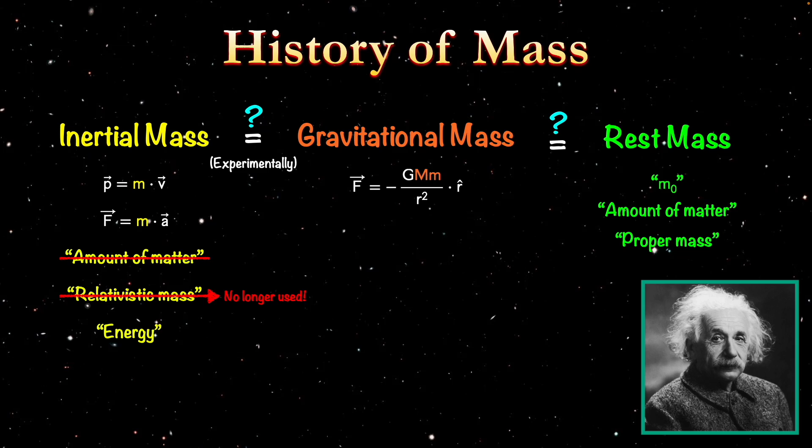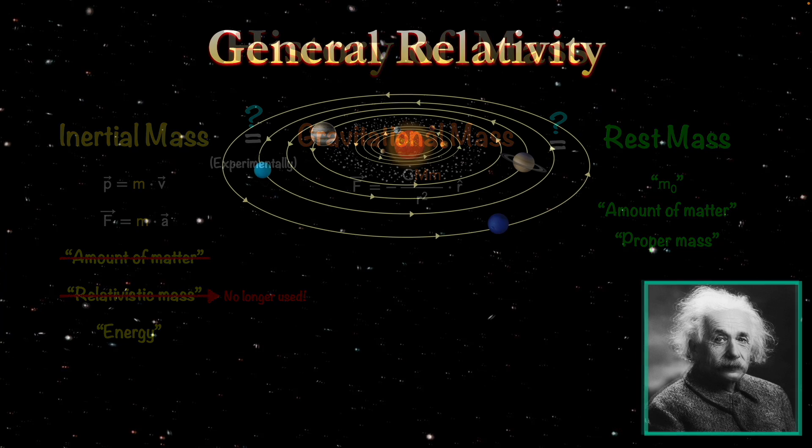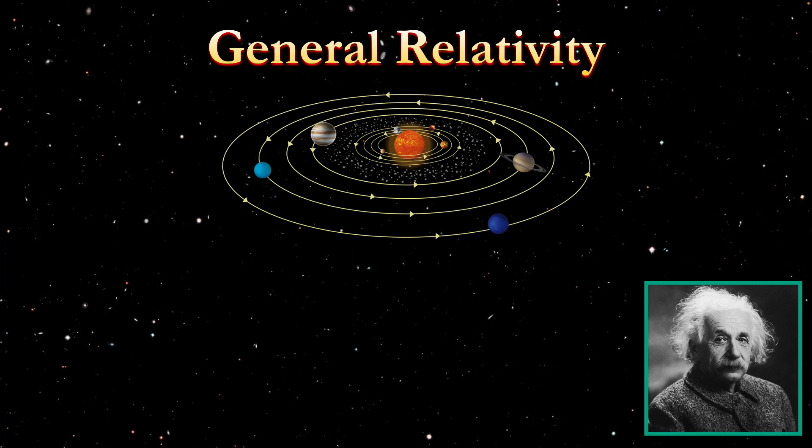Well, when Einstein developed special relativity, he immediately realized that it was incompatible with Newton's law of gravity. So he had to develop a new theory of gravity, which is called general relativity. In this theory, gravity is not a force that attracts objects, but the result of the curvature of space-time due to the presence of matter.